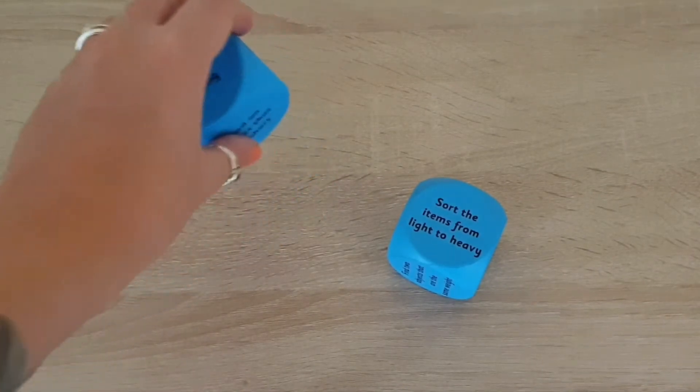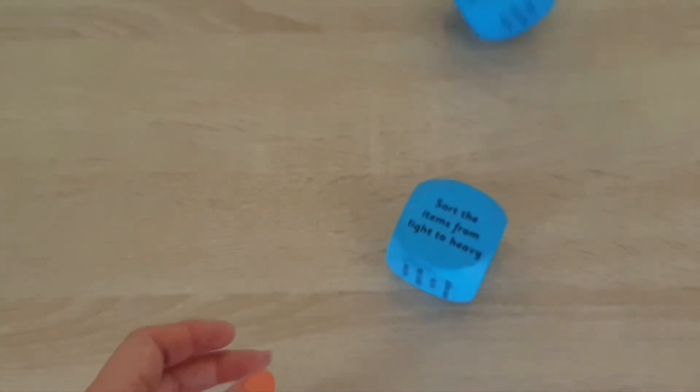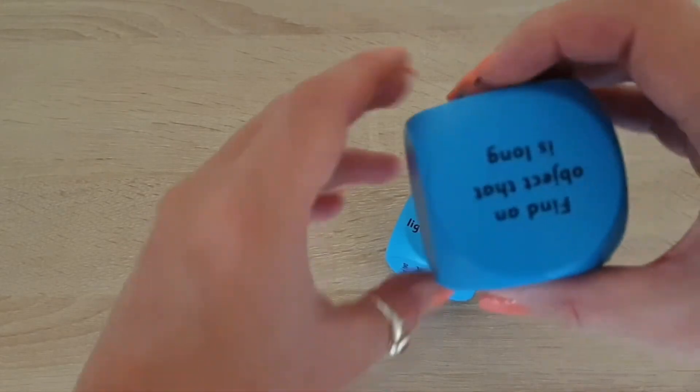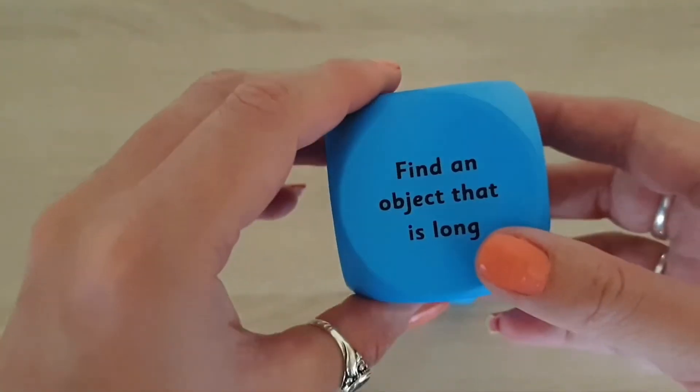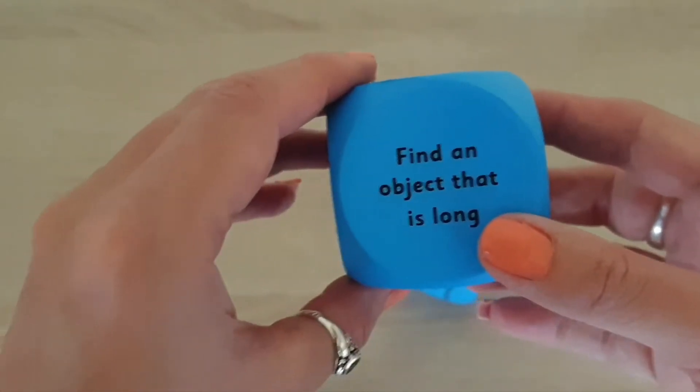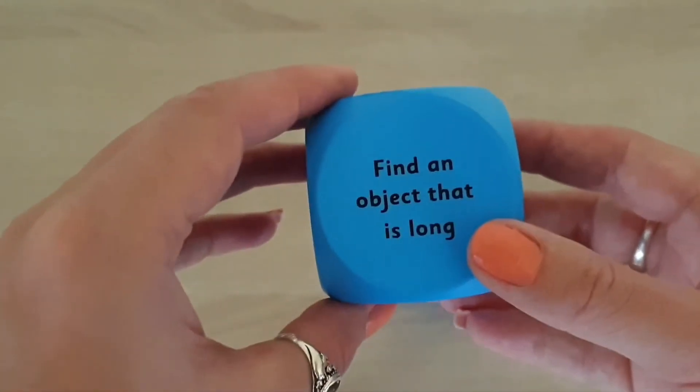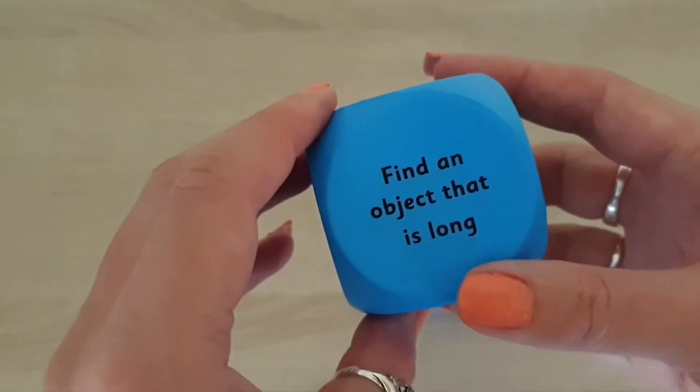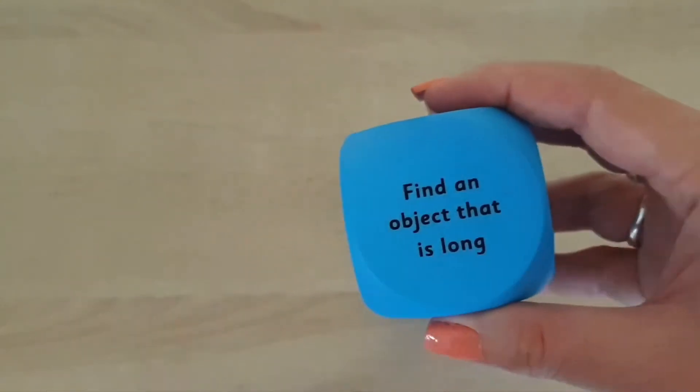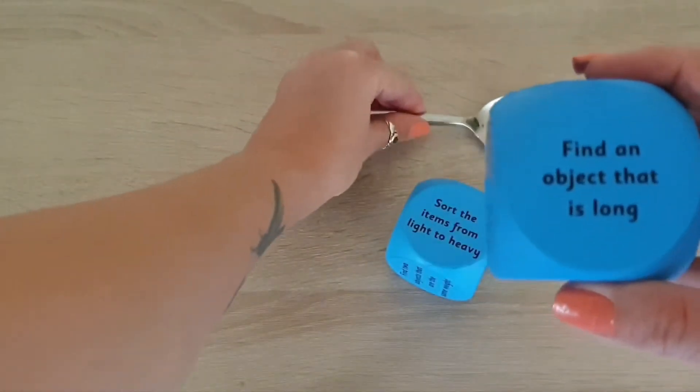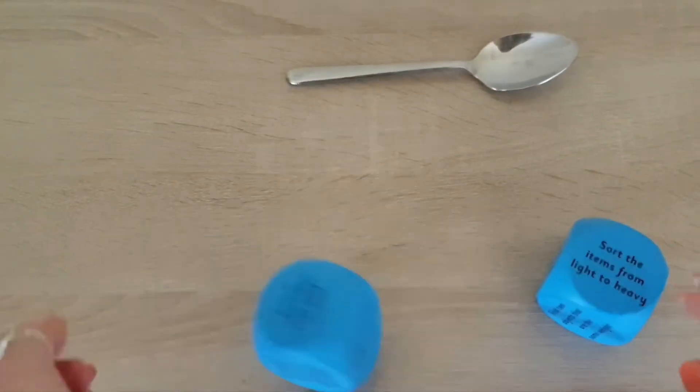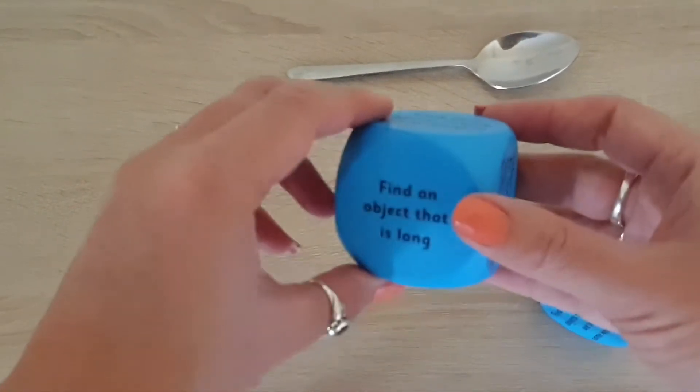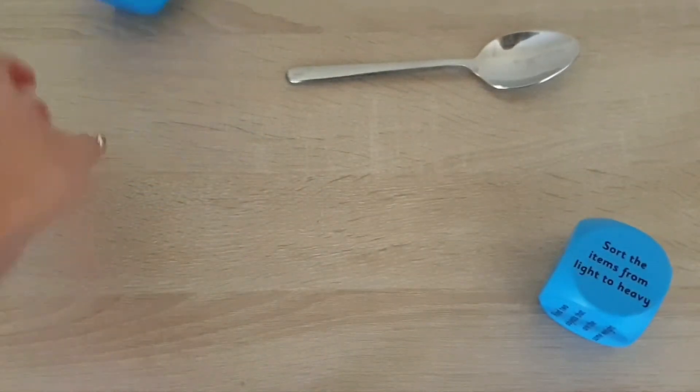So now let's have a little go at using the length cube. We have landed on find an object that is long. So maybe go off around the house again and find a long object. I don't actually have anything here right now that is long, so maybe I might just use our spoon as it's a longish object. Then we'll roll the dice again. Oh, it's landed on the same thing. Let's do it again.